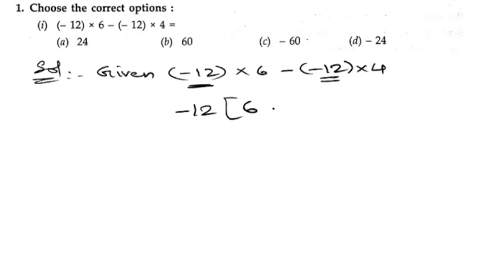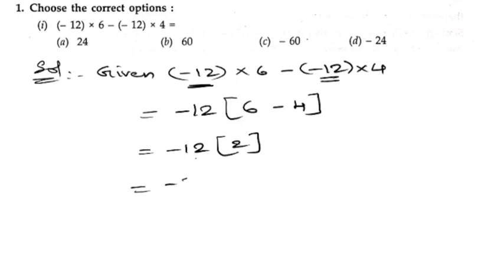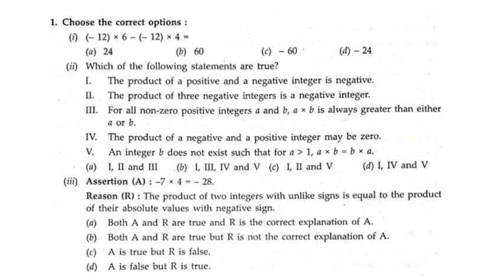If we take out minus 12 common, we get 6 minus 4. So minus 12 into 2, and 12 into 2 is 24. So the answer is option D, and the answer is minus 24.